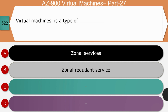Question 2: Is a virtual machine a type of zonal service or zone-redundant service? The right answer is zonal services. Zonal services are services where the zone is specified on deployment. To achieve high availability, you must explicitly deploy multiple zonal services into two or more zones. Virtual machines and public IP addresses are examples of zonal services.